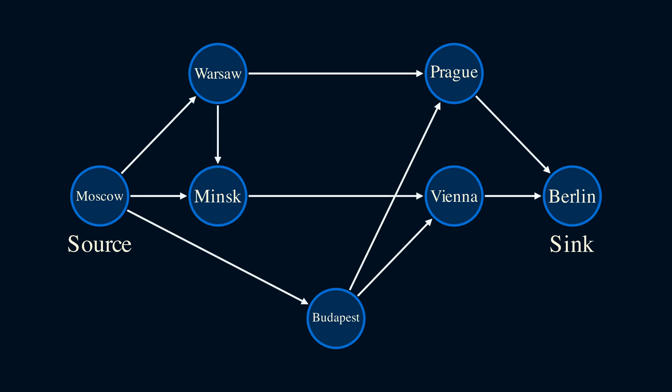And we have these edges representing the rail connections. Note that these edges have arrows, which means, for example, we can send trains from Minsk to Vienna, but not the other way around. Also, note that we only have outgoing edges from the source, so trains can only leave Moscow, and it has an unlimited supply of trains. Likewise, there are only incoming edges into the sink, which means trains can only enter Berlin. Finally, each edge has a pair of numbers. The number on the right is the capacity, which is the maximum number of trains per day that can travel on that edge. And the number on the left is what's called the flow, which is the number of trains per day traveling on the edge in the current solution. Right now, since the flow is all zero, we don't have any trains traveling on any edges. Given that the flow can't exceed the capacity, what is the maximum number of trains that can enter Berlin each day?